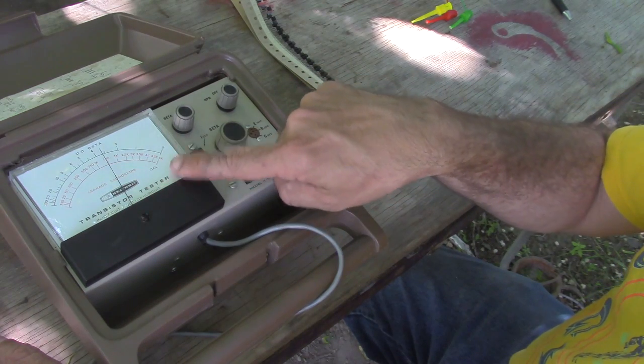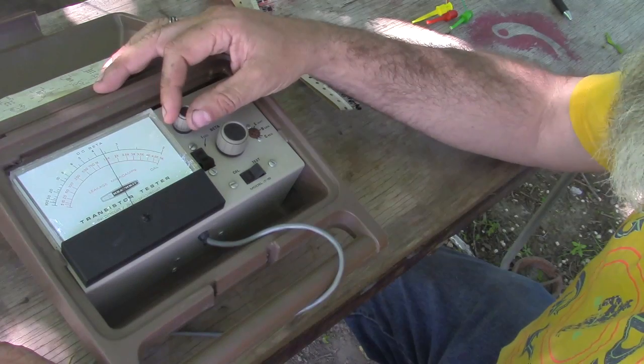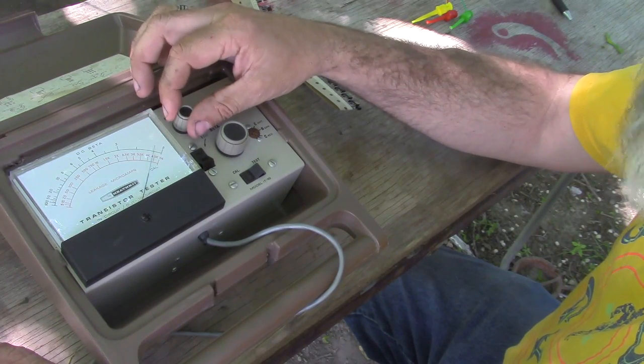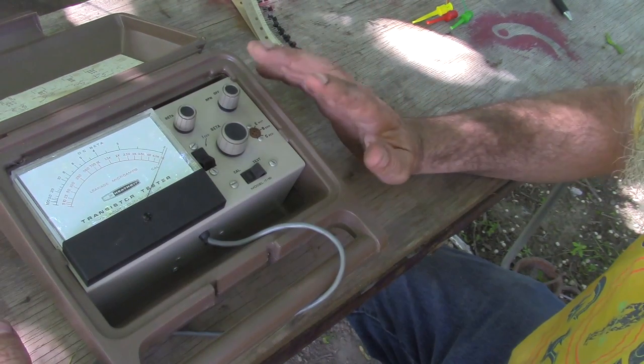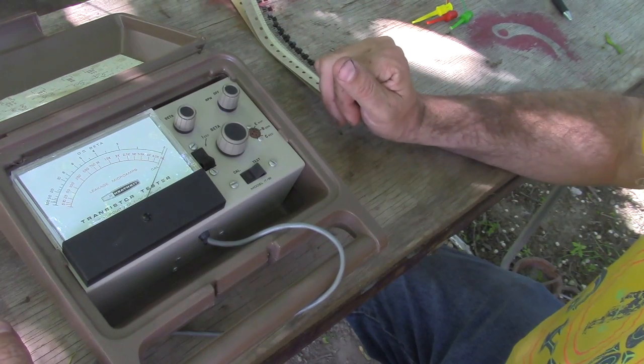Basically you use this calibrate knob to zero this meter out. Over here you're gonna read the beta or the gain on the top, or the HFE. So we calibrate this. You can look this up, this is actually a relatively inexpensive, relatively easy circuit. There's probably more in the switching than there is the actual circuit.